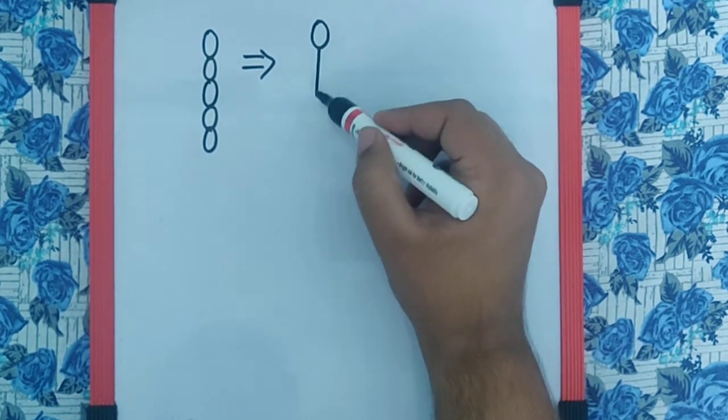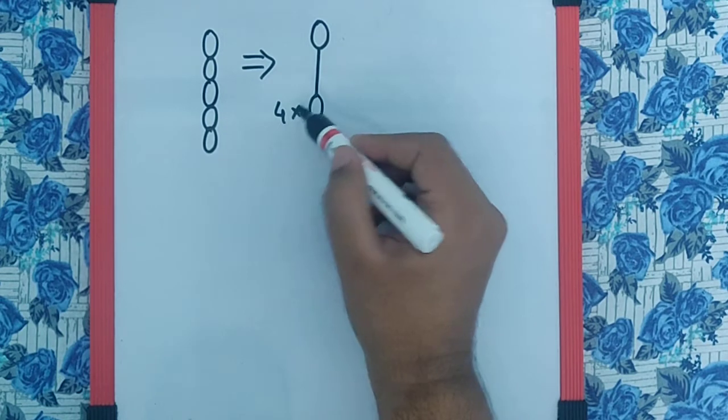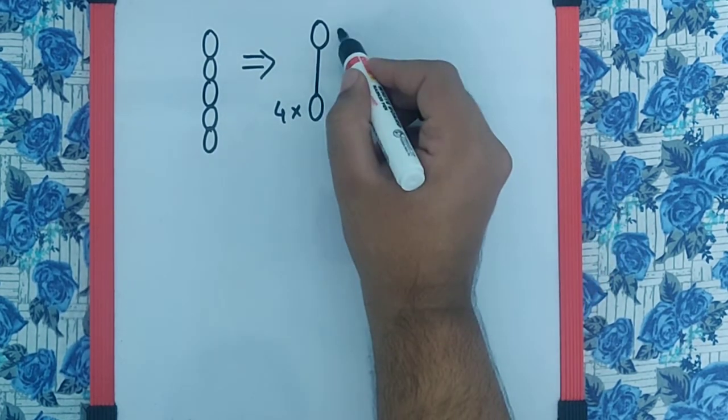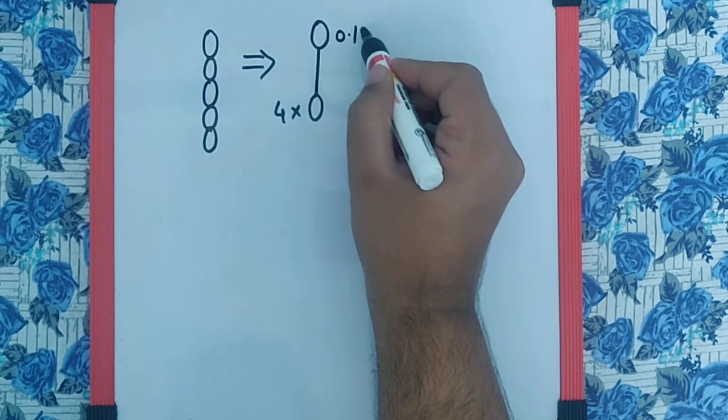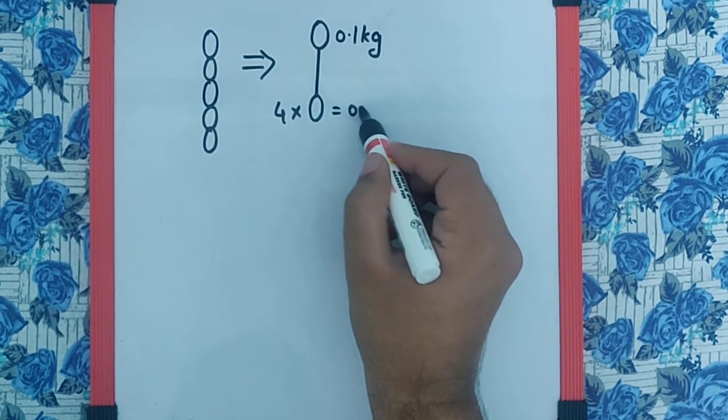Like this, saying that the mass over here is 0.1 kg and the mass over here becomes 0.4 kg.